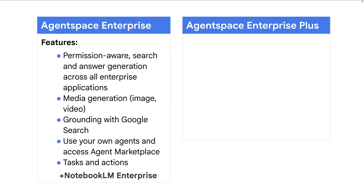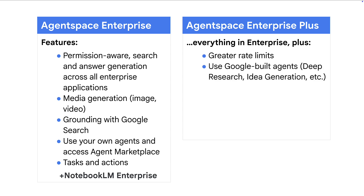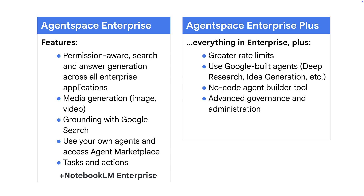The Enterprise Plus tier includes everything in Enterprise, plus greater rate limits, Google-built agents like the Deep Research and Idea Generation agents, a no-code agent builder tool, and advanced governance and administration features.